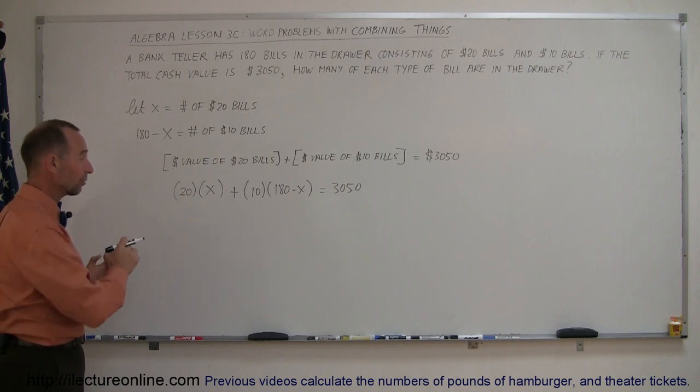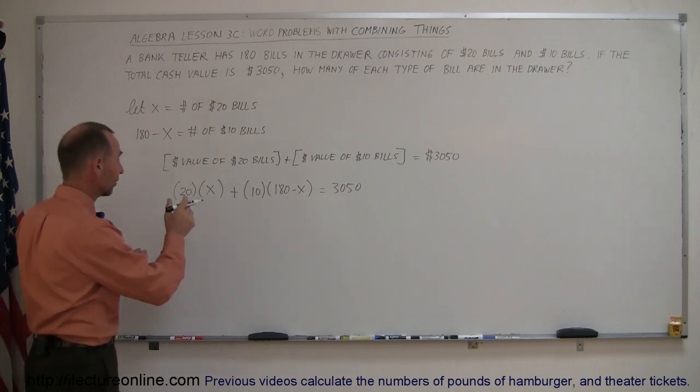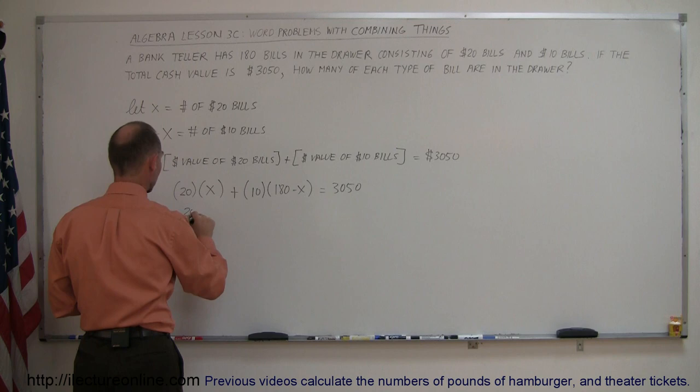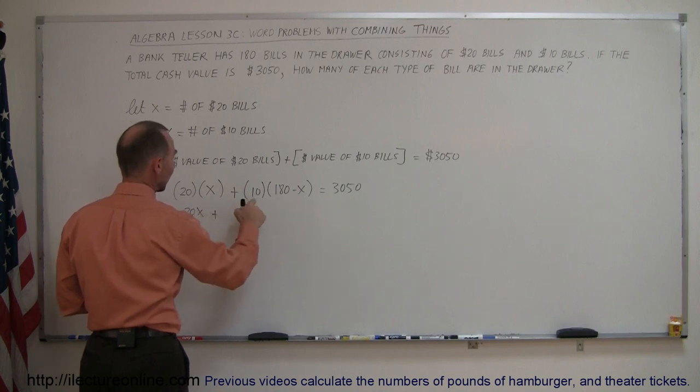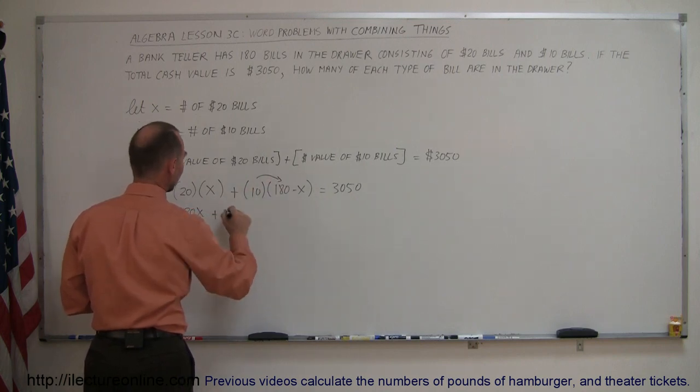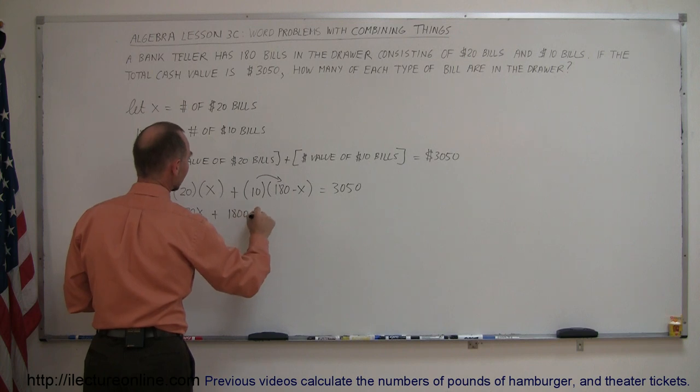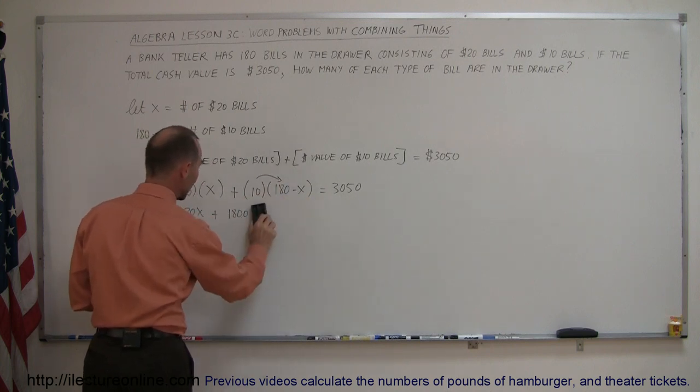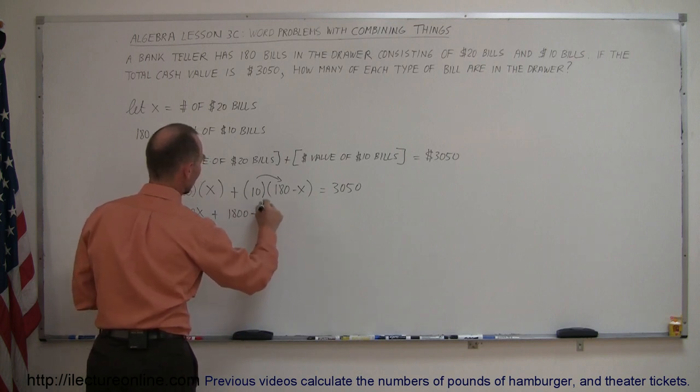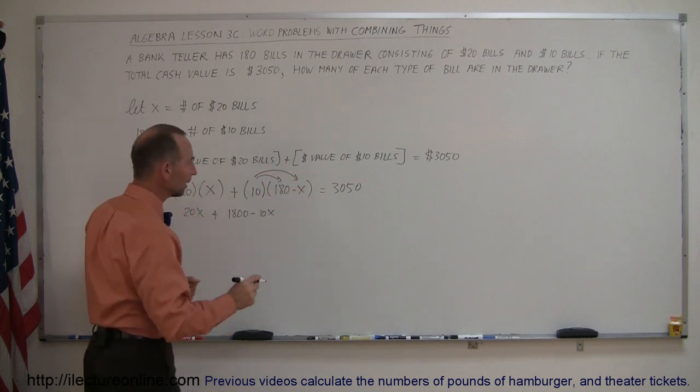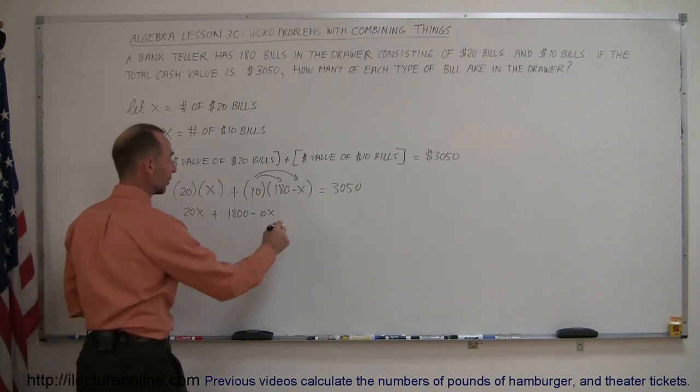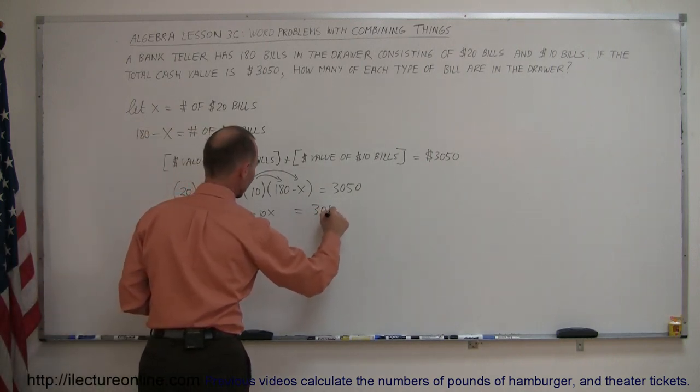All right, now we go ahead and solve that. First, let's get rid of the parentheses. So 20 times x is 20x plus 10 times 180 is 1,800, and plus 10 times minus x, that's not a plus, that would be a minus 10x. So we multiply the 10 by both 180 and the minus x, and that must equal what's on the right side of the equal sign, which is $3,050.